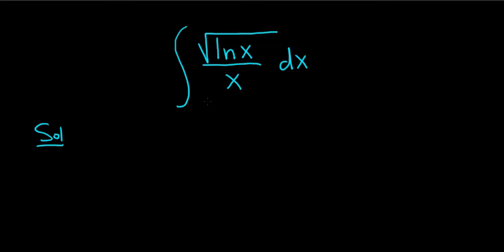A good idea in a problem like this is to start with a u-substitution. Perhaps we can let what's inside the square root be equal to our u. So we'll let u be equal to the natural log of x. Typically that's a good strategy — u is usually whatever is being raised to a power or whatever is in a root. It's a good first attempt.